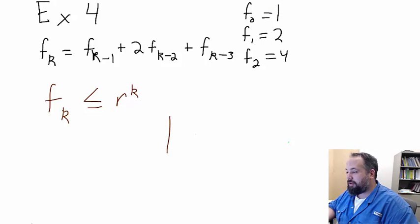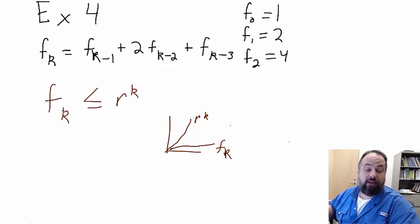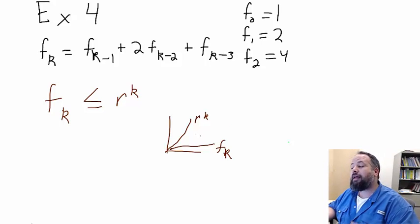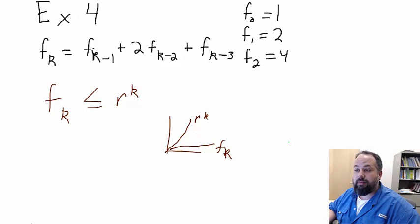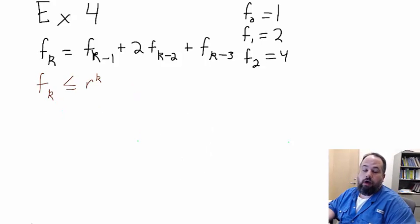So, if we think of it in graphing terms, r raised to the k will always be greater than our f sub k. That's what we're looking for. What is the r that makes that true?